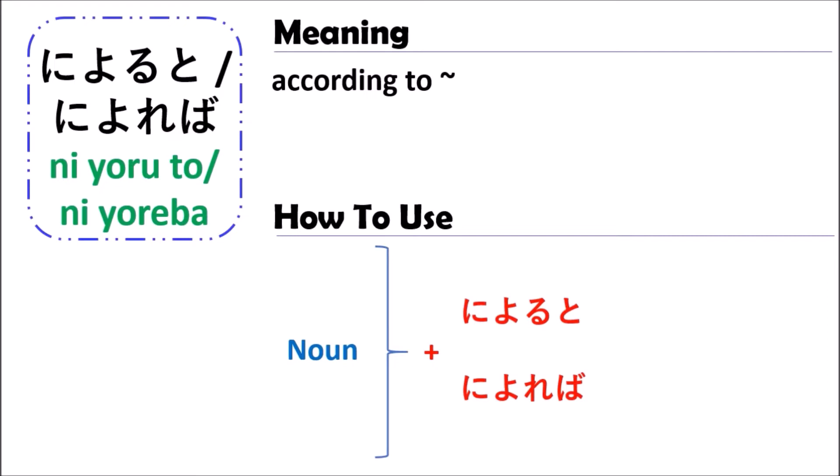But sometimes it can be translated as 'if.' In this case, though, they don't translate it as 'if' — they translate it as 'according to.' So to make it more understandable, let's go and see some examples together.